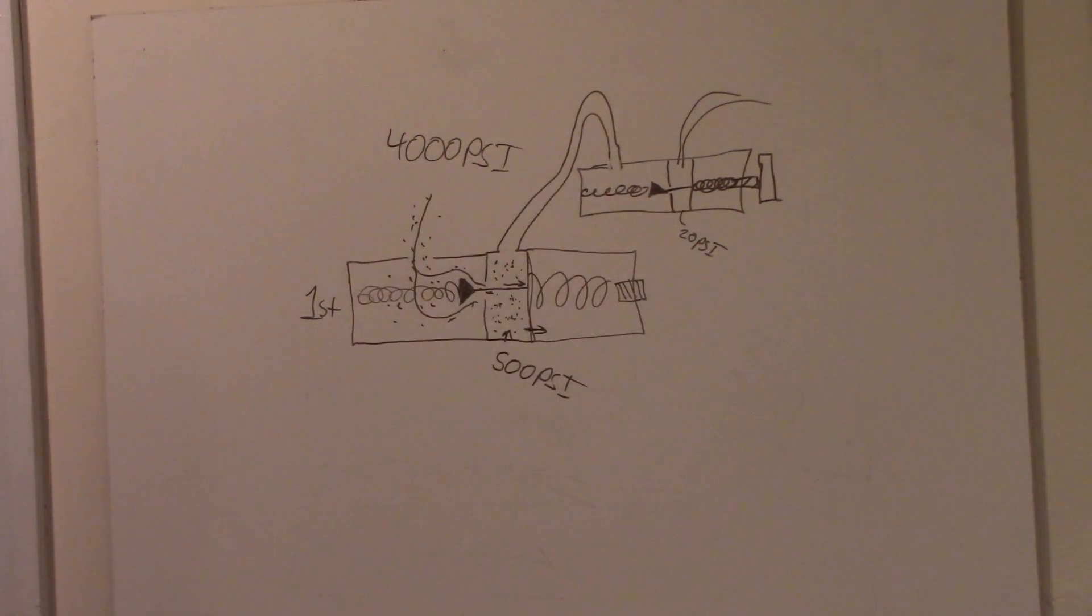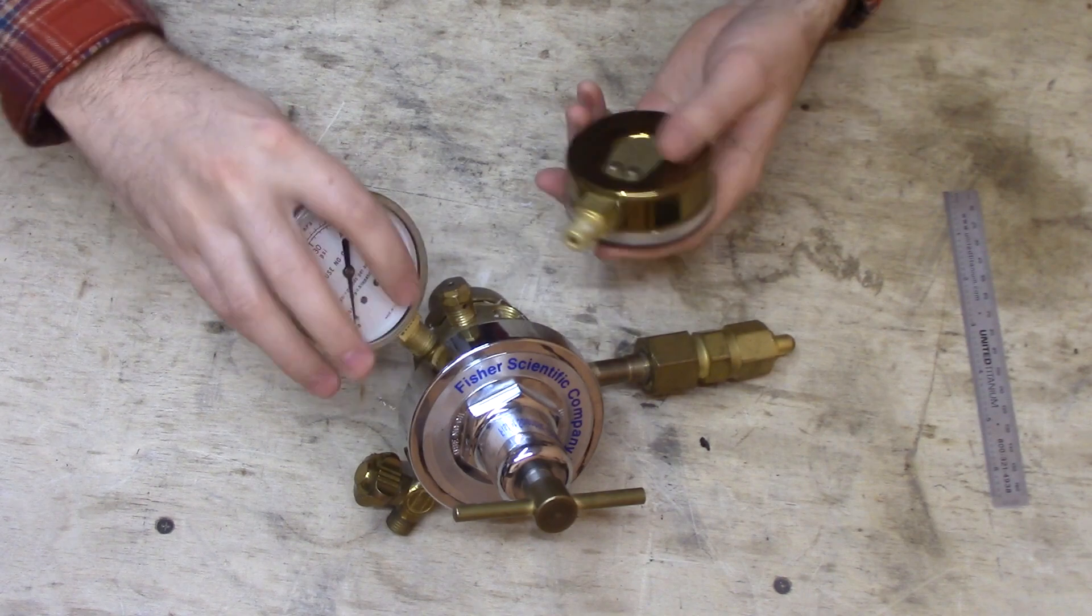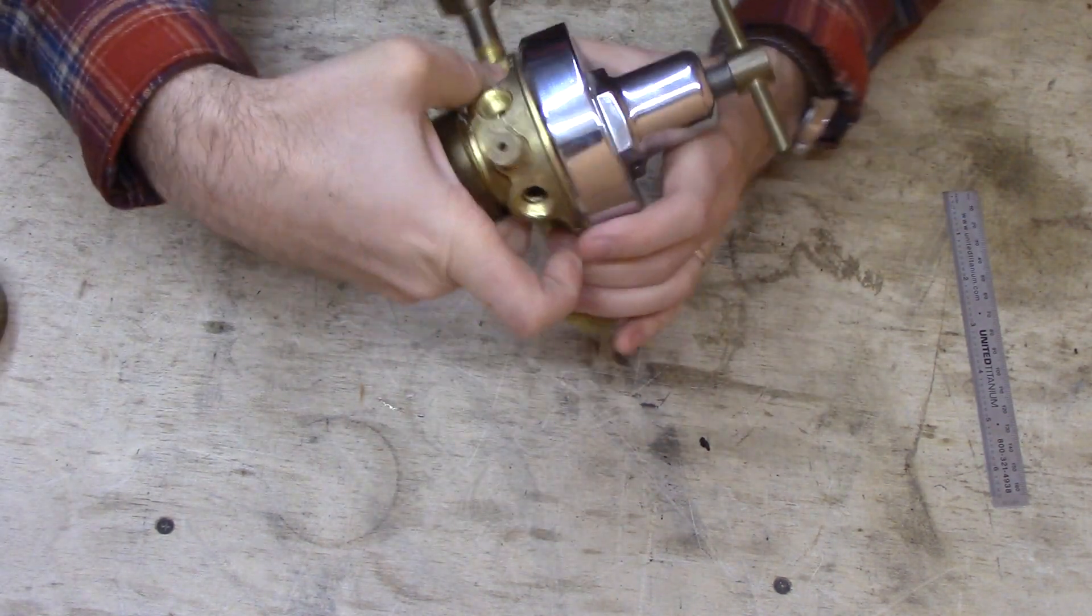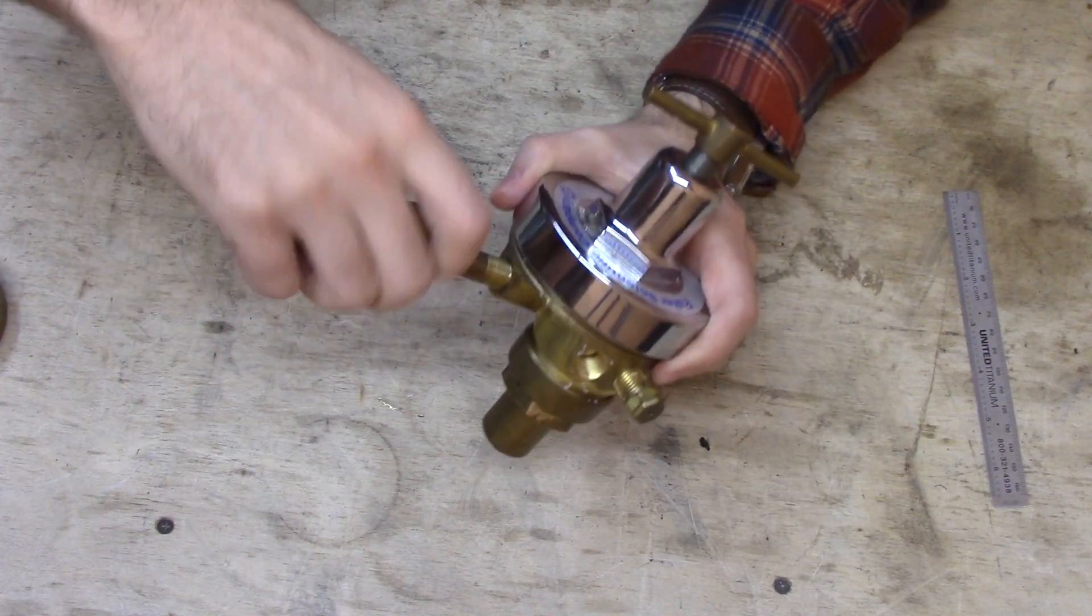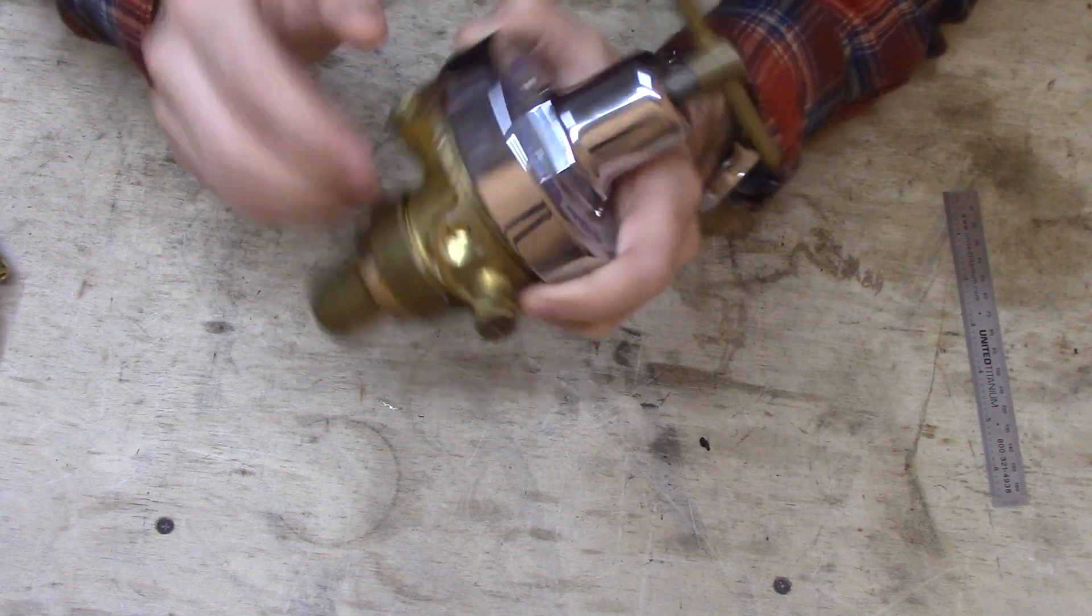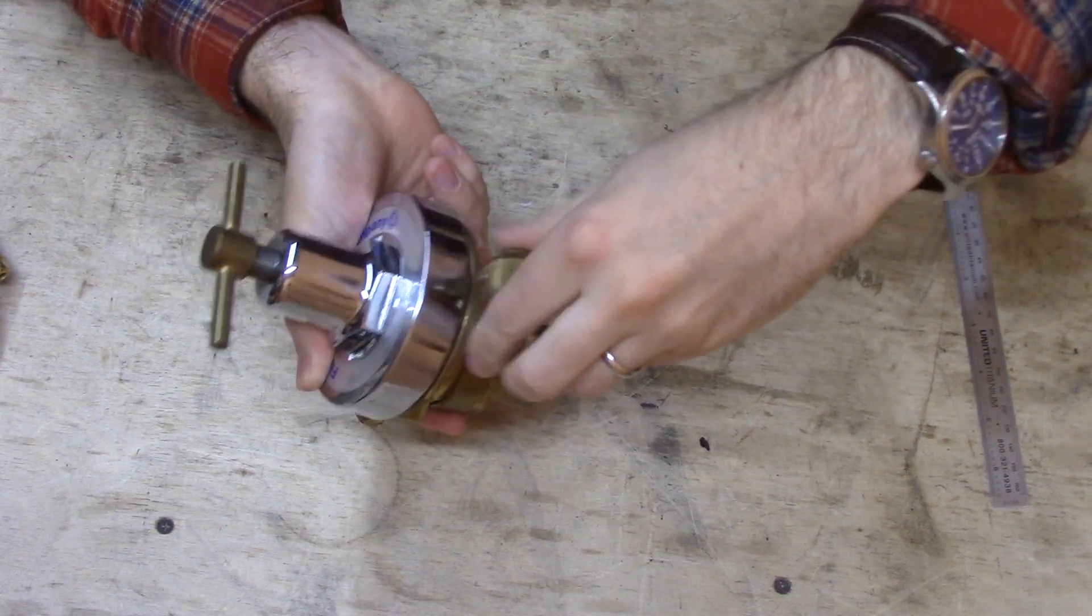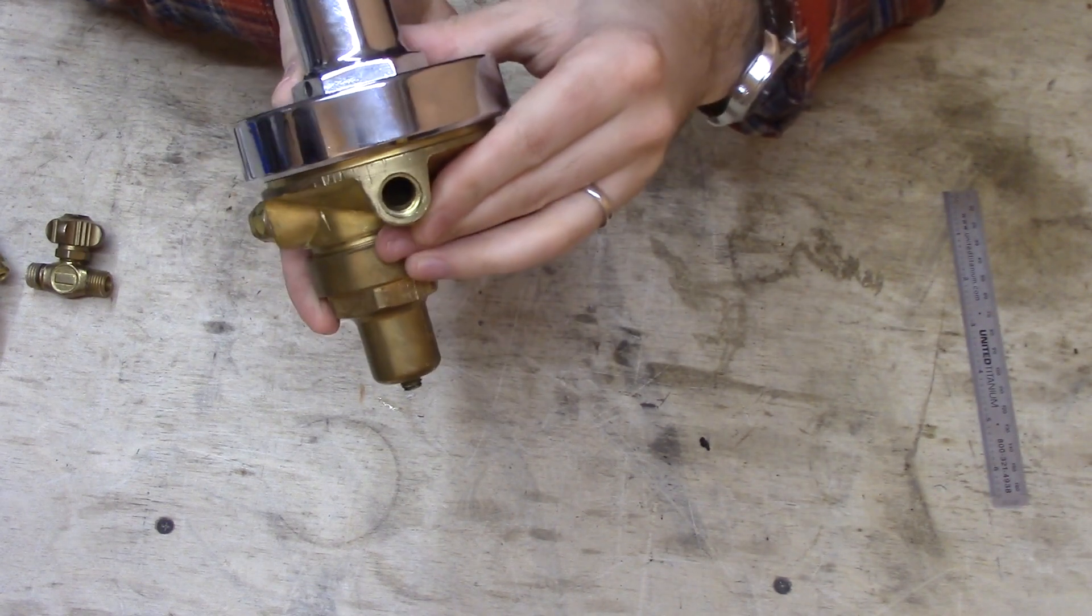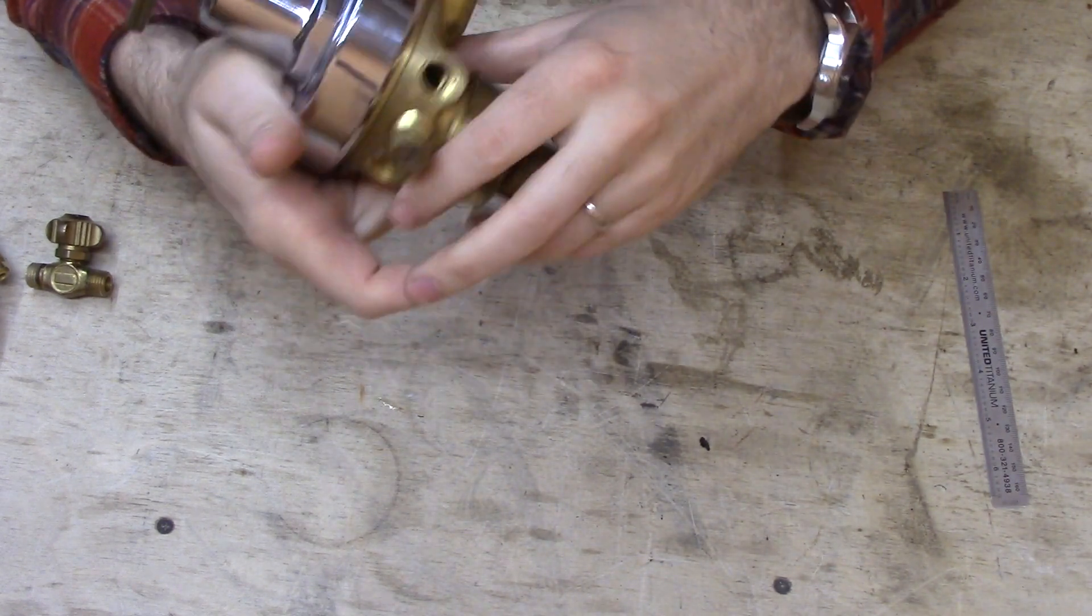These gauges just screw off, and I'm probably going to save these gauges for something. Here's where the gas goes into the regulator—you see there's just a little hole drilled. And then here is where the gas comes out of the regulator. You can see that's a bigger hole, but still just a hole in there.